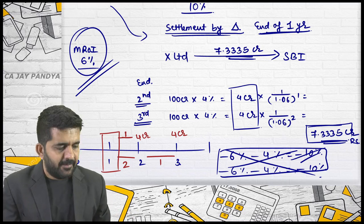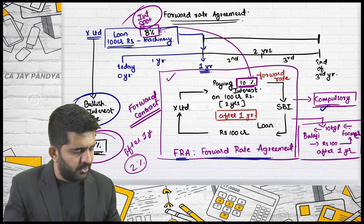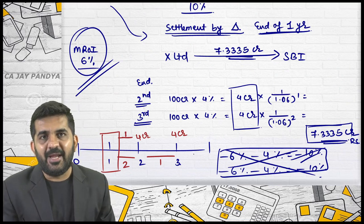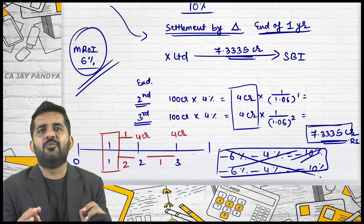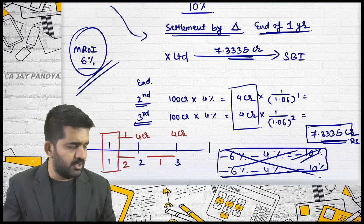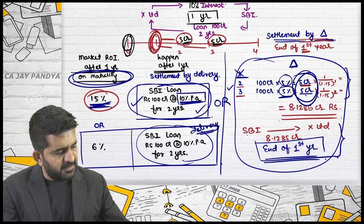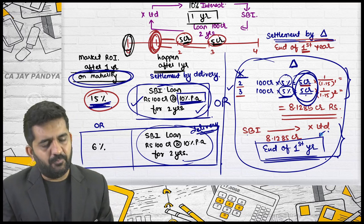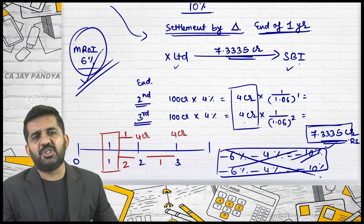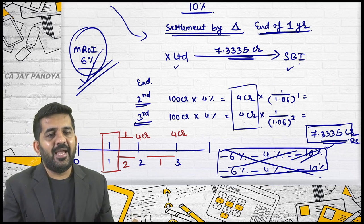This agreement between SBI and X Limited is termed as the forward rate agreement. Settlement always happens by differences — they never happen by delivery in practice. If X Limited was bullish and market is bullish, SBI pays to X Limited. If X Limited was bullish and market is bearish, X Limited pays to SBI. The present value concept comes into the settlement calculation.